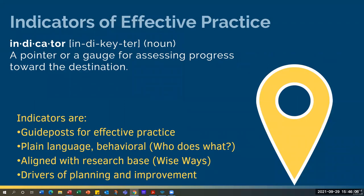Indicators of effective practice are guideposts for the effective practice. We essentially took the effective practice and broke it down into all of the things — in plain, behavioral language without a lot of jargon — so it's clear who does what. It's aligned with the research. A lot of school improvement plans require schools to identify the research they're using. With Derago Star, you don't have to do that because it's actually built into the system. Unless you're using some additional research, the research is given to you to read already.